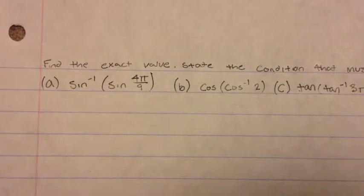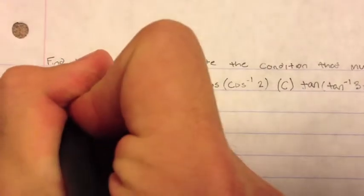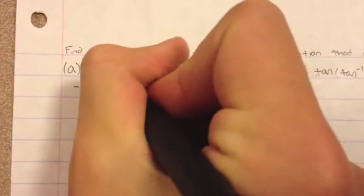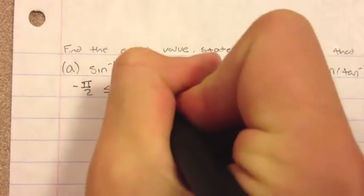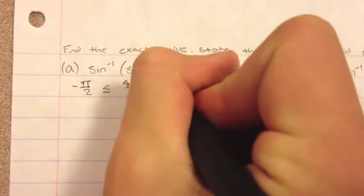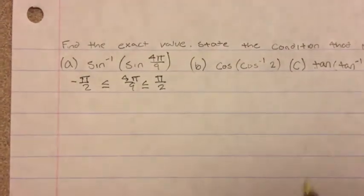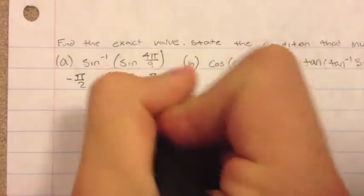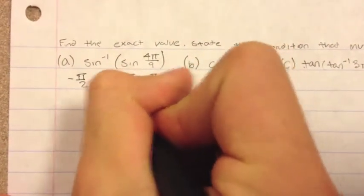The domain that it must satisfy is negative pi over 2 and pi over 2. So since 4 pi over 9 is in the domain, then the answer is 4 pi over 9.